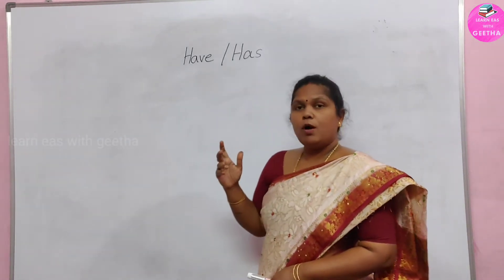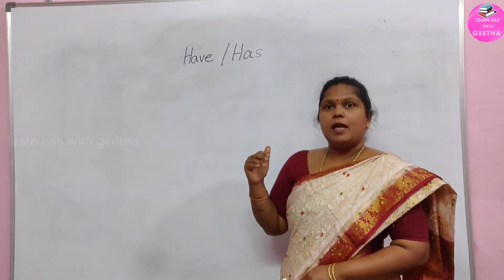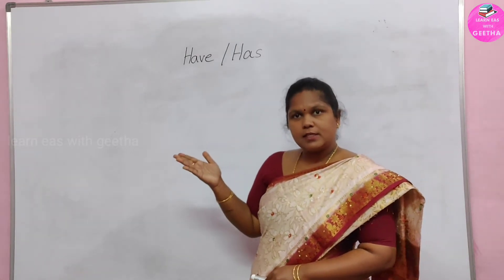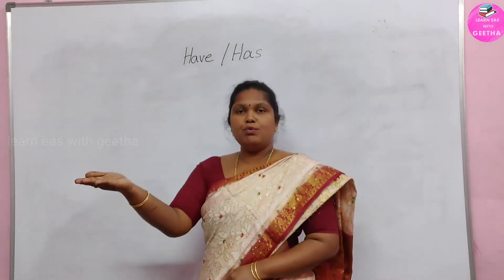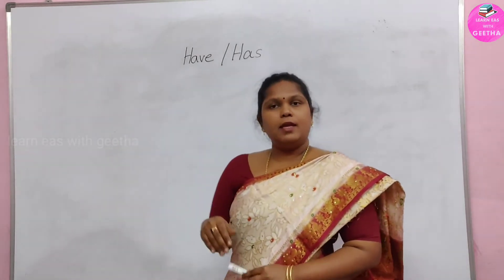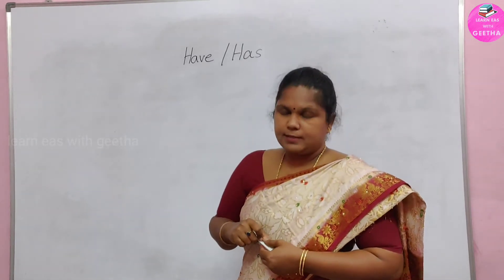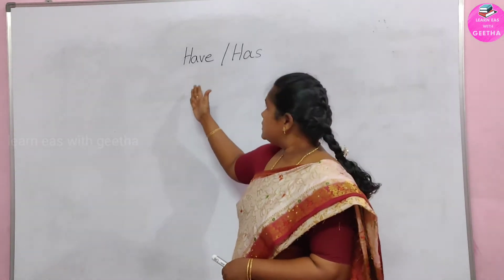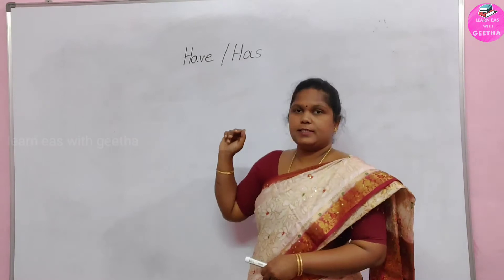We already know about persons. We know: he, she, it, I, we, you, they. To those persons, we use this have and has.